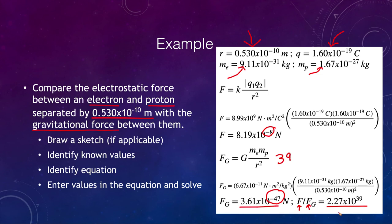The electrostatic force is much, much stronger than the gravitational force. You can see this easily if you take a plastic comb and rub it in your hair — you can actually pick up a small piece of paper against gravity. Even though the entire Earth is pulling down on that piece of paper, the electrostatic force is so many times stronger.